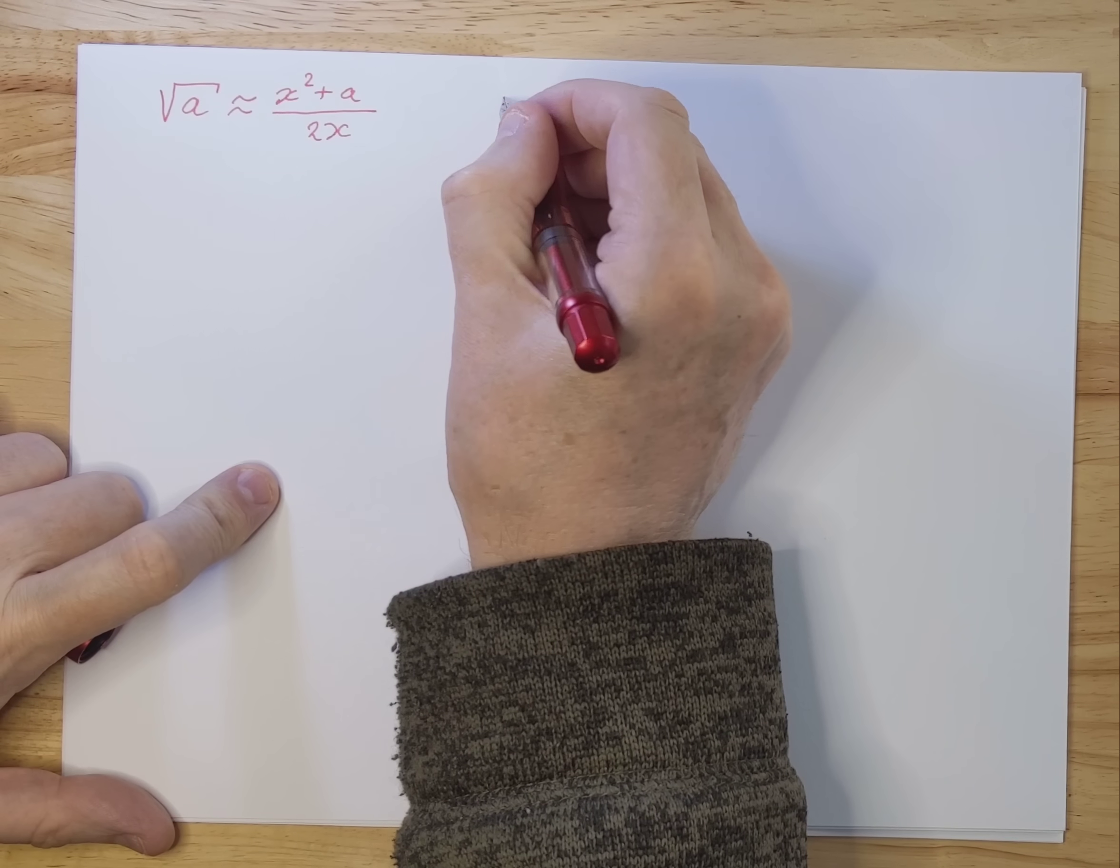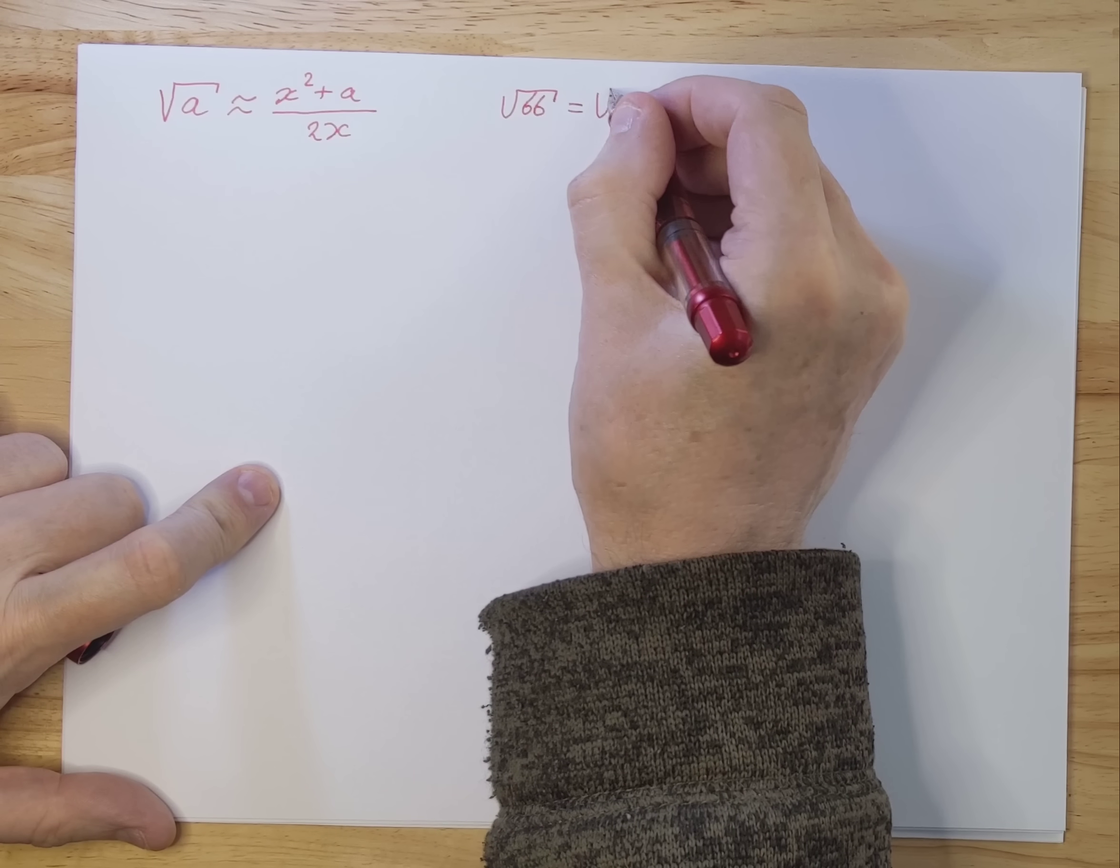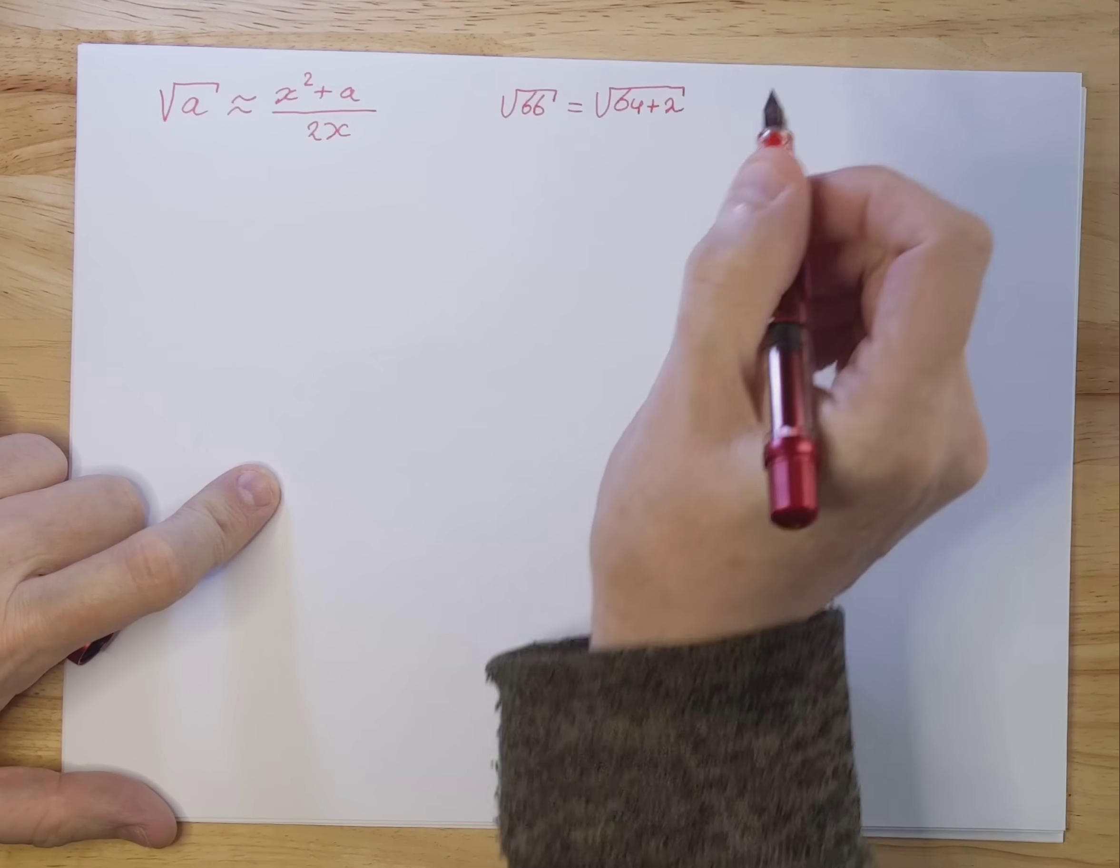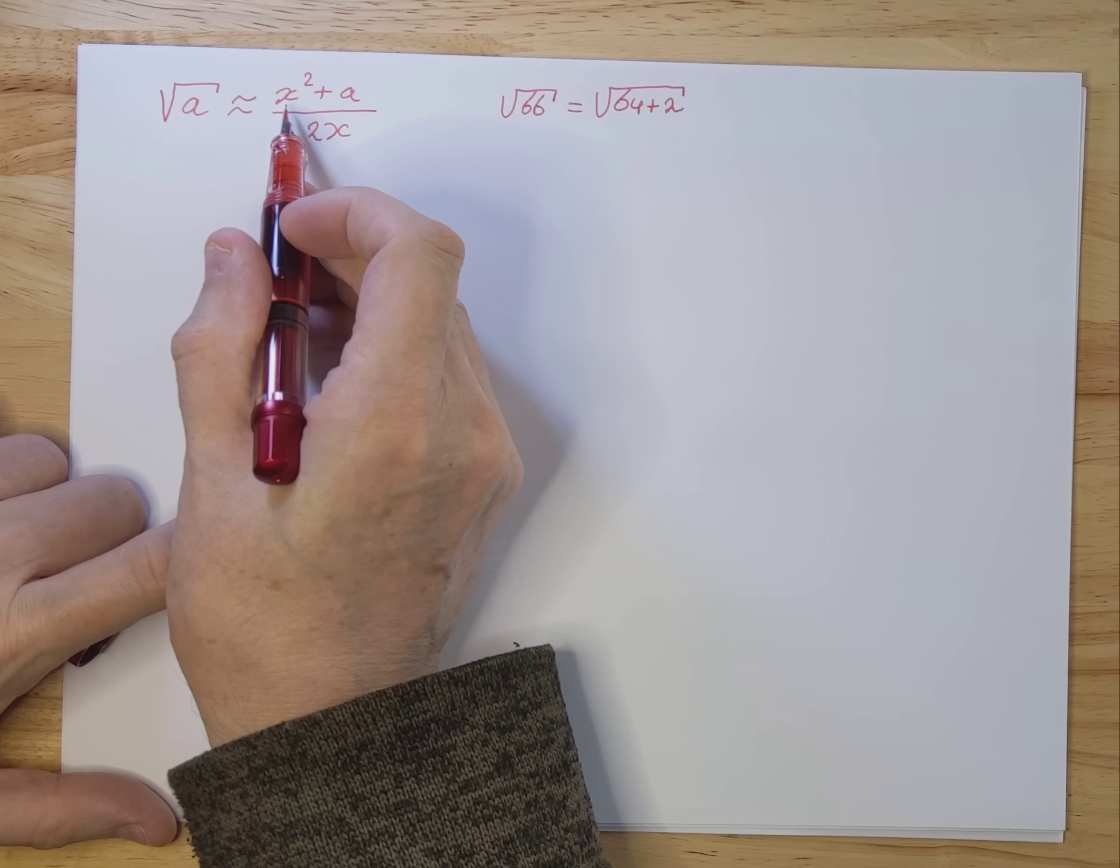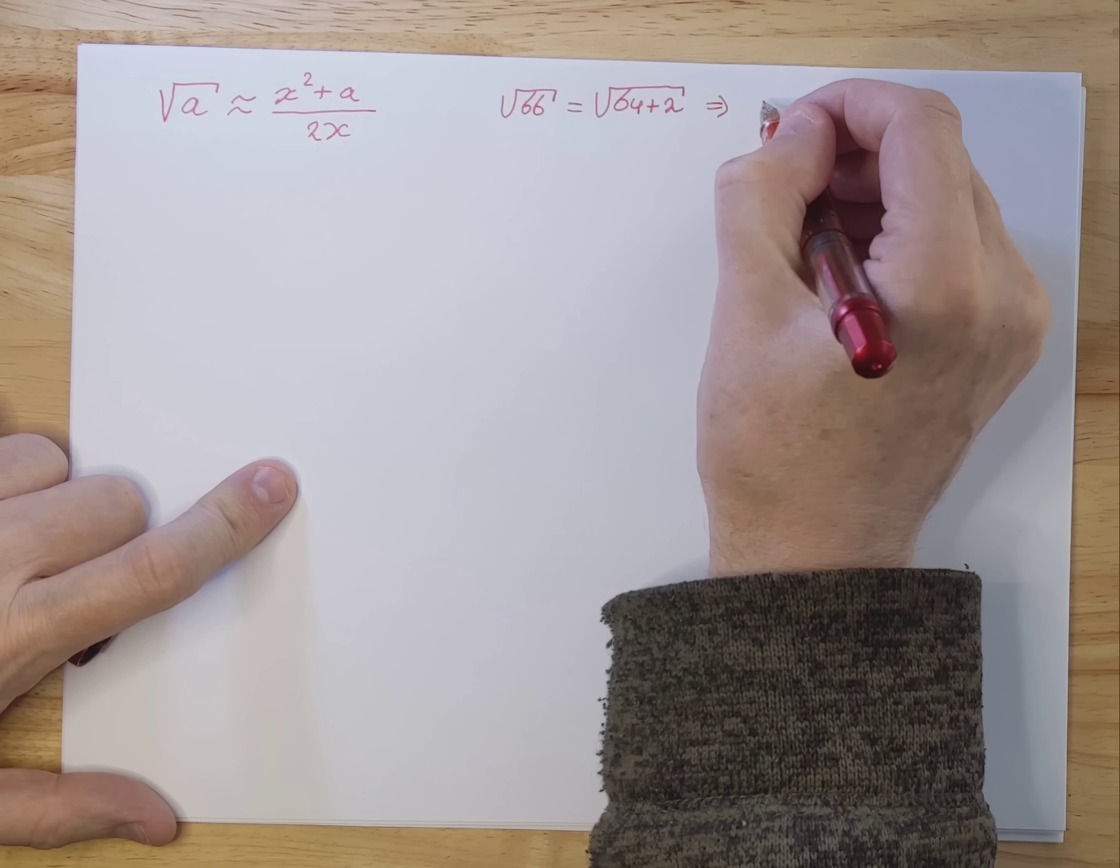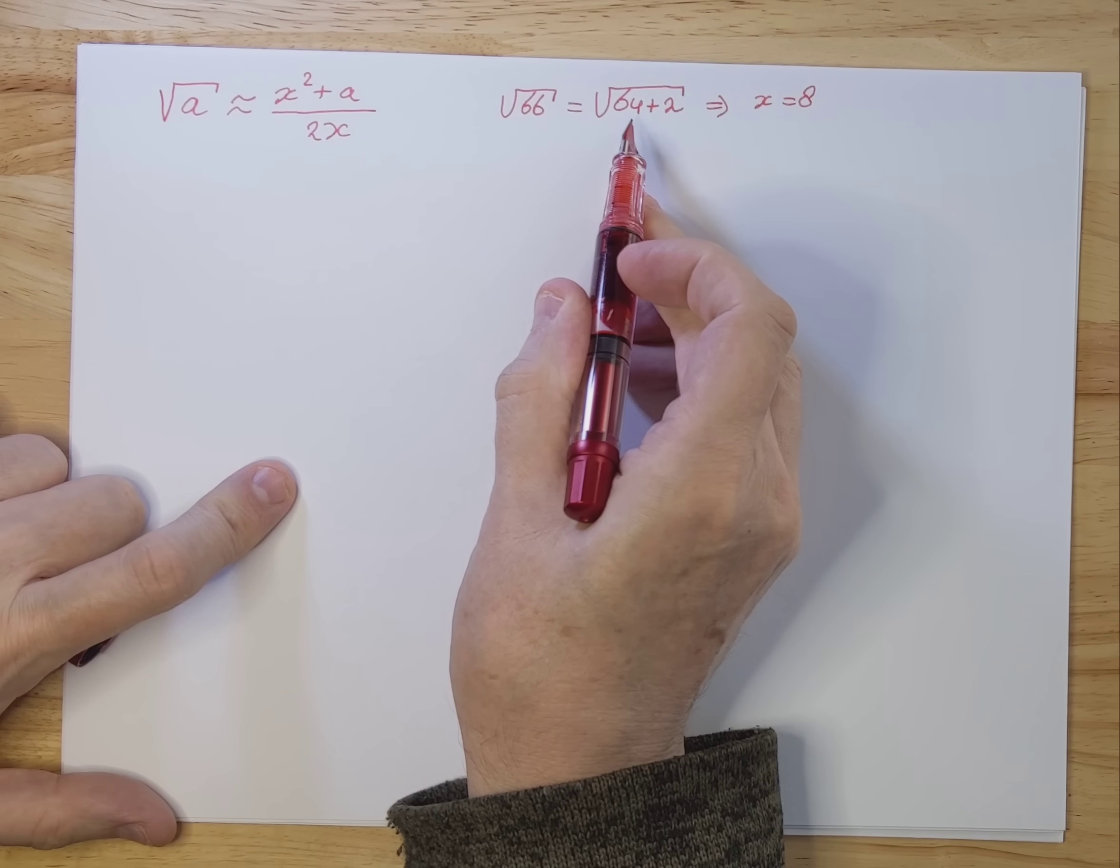Let's take the square root of 66. 66 can be written as 64 plus 2. So 64 in this case you can take the square root of. That's that x squared over here. Based on this we can say that x equals 8, because x squared is 64.